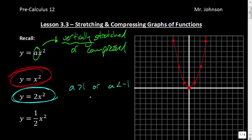If a were equal to negative 2, it would be the exact same result, only of course the negative would make it reflected. So to graph y = 2x², all the points in the y-axis are going to be stretched by a factor of 2 — we just multiply by 2.